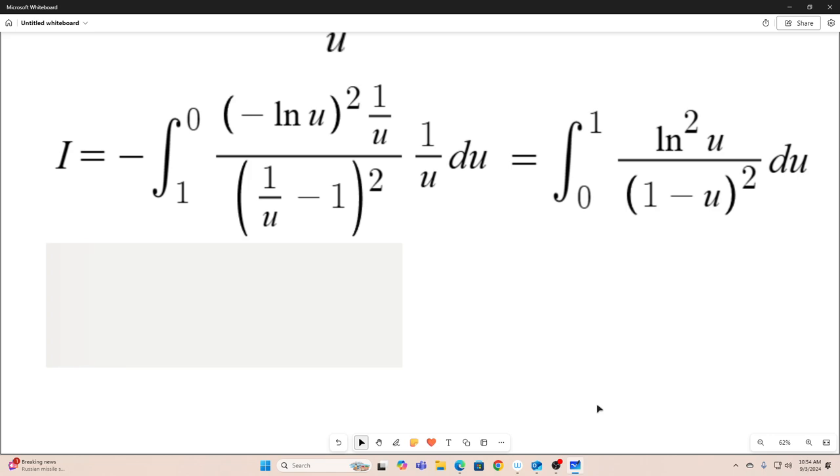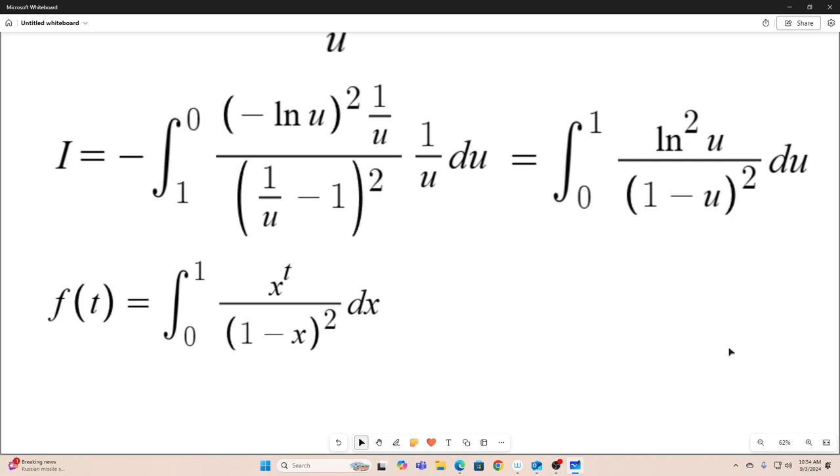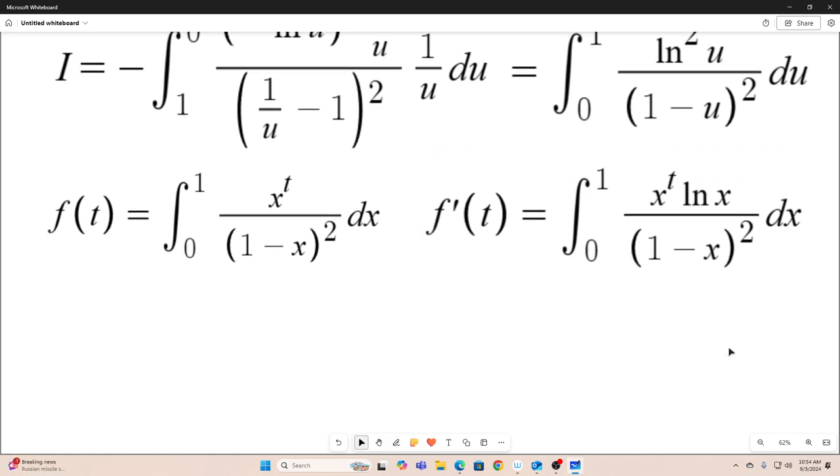So next, let's create a function of t equal to this. And next, we'll use the Leibniz rule for differentiation under the integral sign to take f prime of t. And then we'll do it again to take f double prime of t.